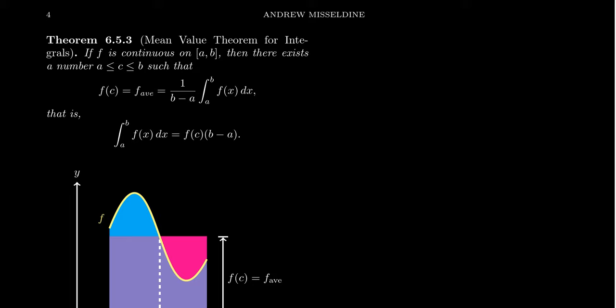Now this idea of average value is related to the mean value theorem we saw in Calculus 1. The mean value theorem from Calculus 1 tells us that if a function is differentiable, then there exists a value of x such that the derivative is equal to the average rate of change of the function — that is, there's a moment where the instantaneous rate of change matches the average rate of change.